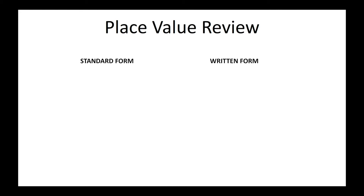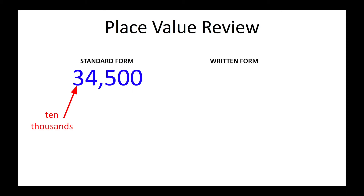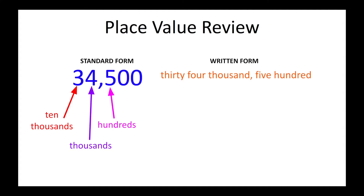The other day, we reviewed two ways to write numbers: in standard form, which is with the digits, and in written form, which is how you would write and read the number in words. In 34,500, the three is in the ten thousands place, the four in the thousands place, and the five is in the hundreds place. In written form, the number looks like this: 34,500.